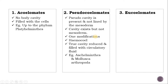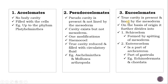The third type is eucoelomate or coelomate: a true cavity is present and lined by mesoderm. On the basis of its origin it further divides into two types: schizocoelom and enterocoelom. Schizocoelom is present in protostomes. The body cavity originates from the splitting of mesoderm — one part attaches to the endoderm and the other surrounds it; the space between them develops into the coelom. The blastopore forms the mouth. Examples are Annelida, Arthropoda, and Mollusca, where haemocoel is found in Arthropoda and Mollusca.